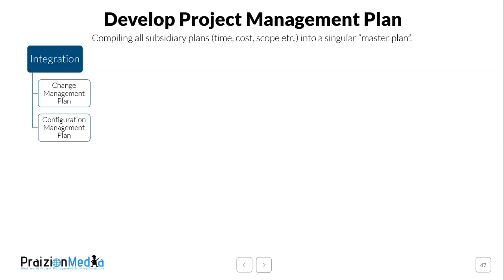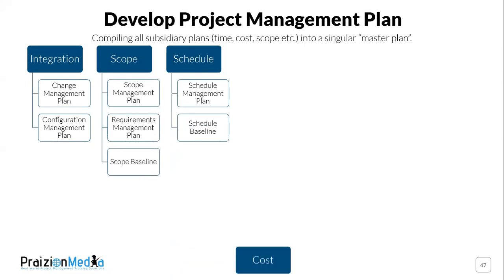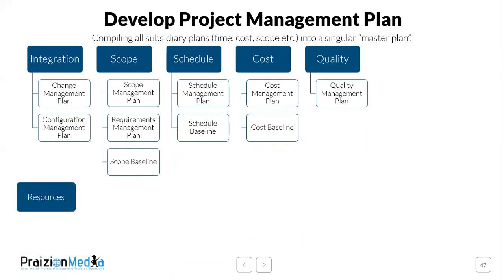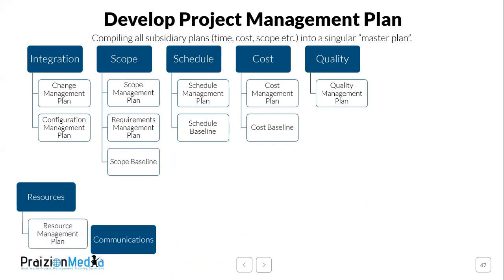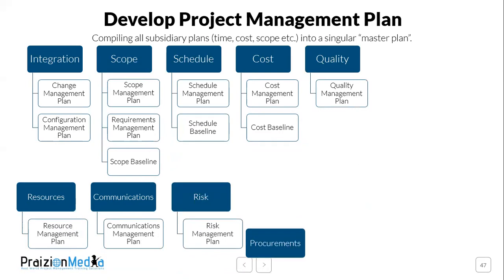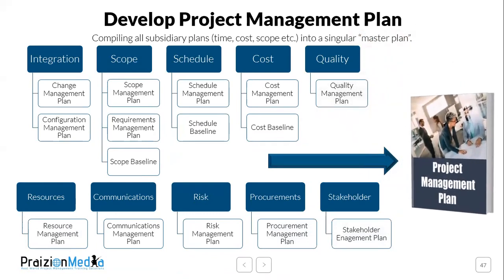We then have scope management, schedule management, and cost management — each with their own baseline: scope baseline, schedule baseline, and cost baseline. Each area also has plans: quality plans, resource management plans, communication management plans, risk management plans, procurement management plans, and stakeholder engagement plans. The confluence of all of these is the project management plan — the major output of the process.